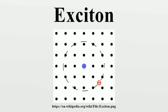An exciton is a bound state of an electron and an electron hole which are attracted to each other by the electrostatic Coulomb force. It is an electrically neutral quasi-particle that exists in insulators, semiconductors, and in some liquids. The exciton is regarded as an elementary excitation of condensed matter that can transport energy without transporting net electric charge.